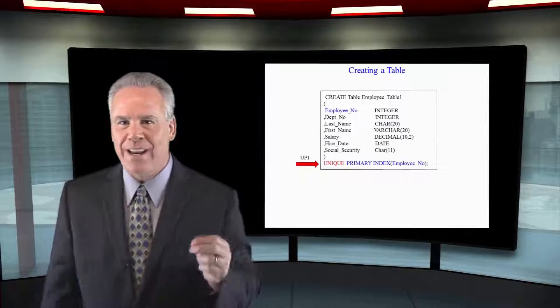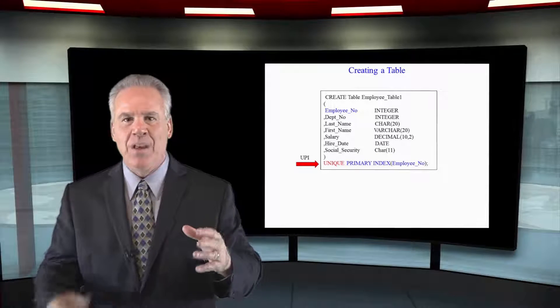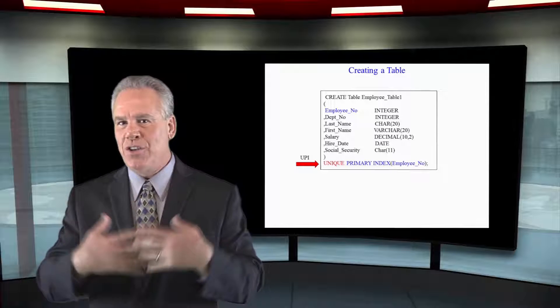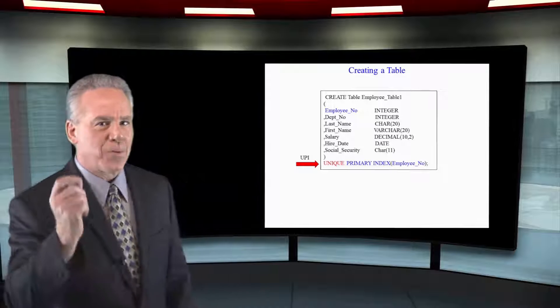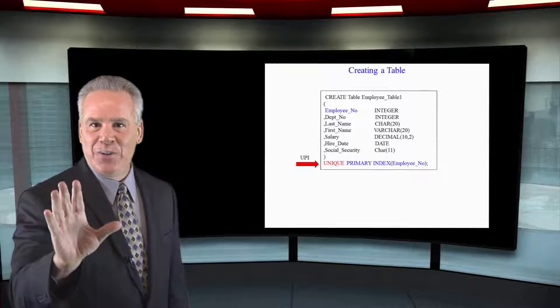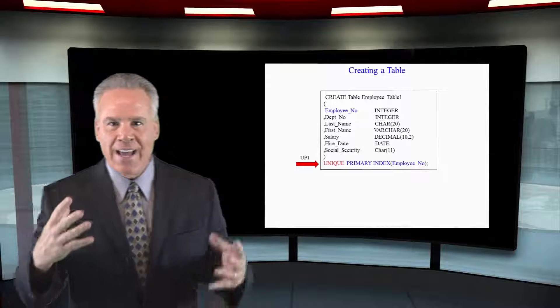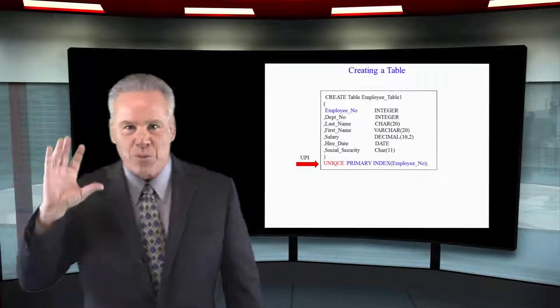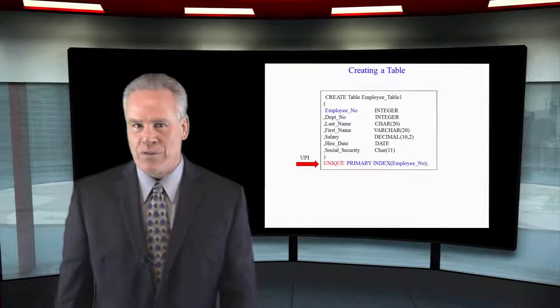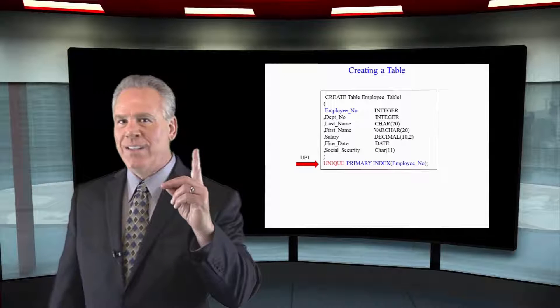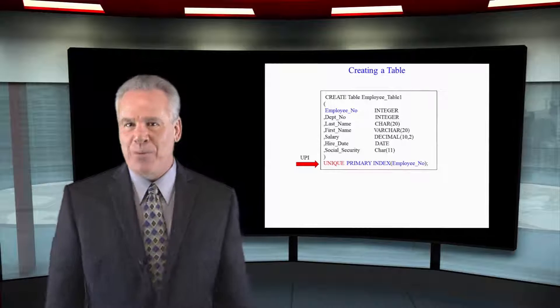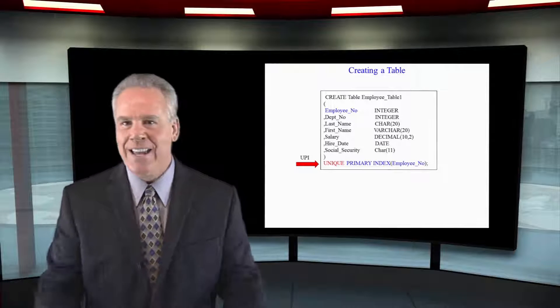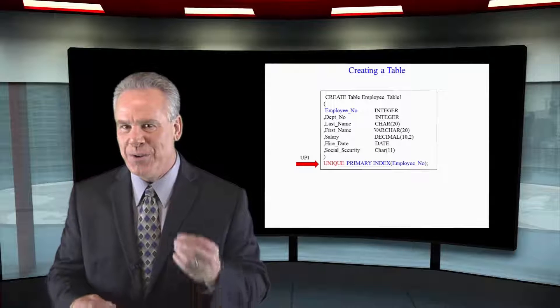This is how simple it is to create a table in Teradata. One of the first things you have to understand is that you're going to give each table a primary index, and this is going to be the primary column that is used to distribute the data that users will usually query on and it's extremely important for joins. So if you had to make one decision about a table, picking the right column for the primary index is the best decision you can make.